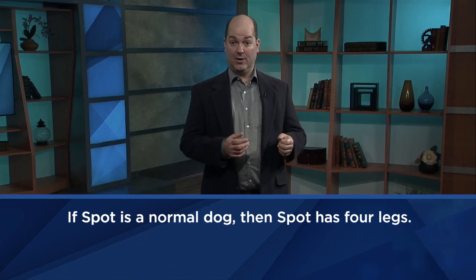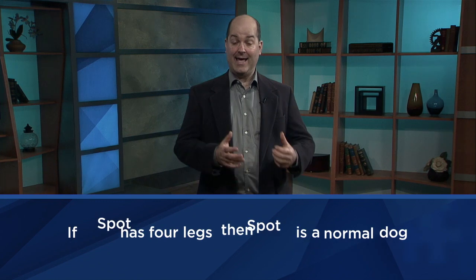One thing about conditional statements is that you cannot generally switch the order. In other words, the statement if p then q is usually different from the statement if q then p. For example, the statement 'if Spot is a normal dog then Spot has four legs' is true, but 'if Spot has four legs then Spot is a normal dog' is false. But sometimes you want to say not just if p then q, but also if q then p. We capture this idea by using the if-and-only-if connective — if I say p if and only if q, you should take that to mean the same thing as if p then q and if q then p.